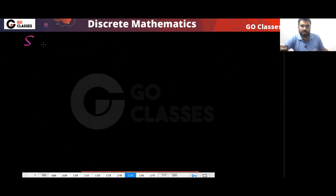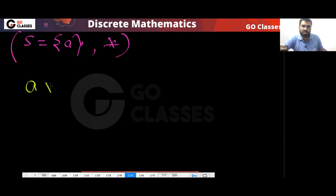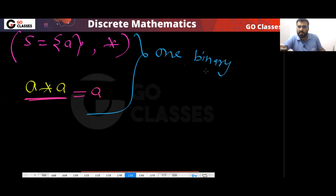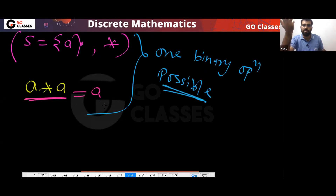If your set has only one element, A, then A×A has only one possibility: (A, A), and A★A must equal A. So there is only one binary operation possible — nothing else you can do. The number of binary operations equals the number of functions from S×S to S.